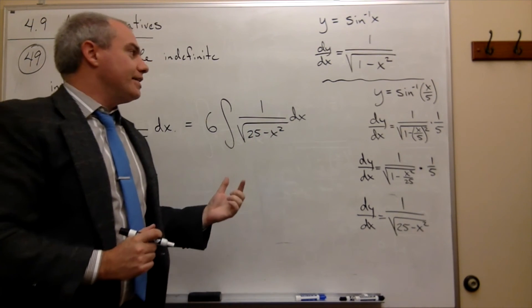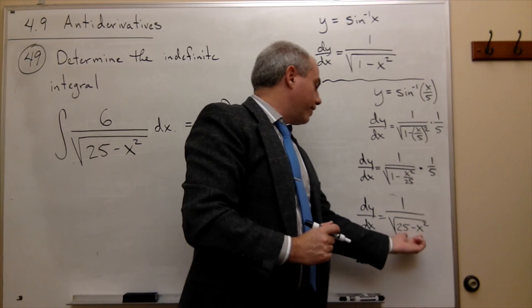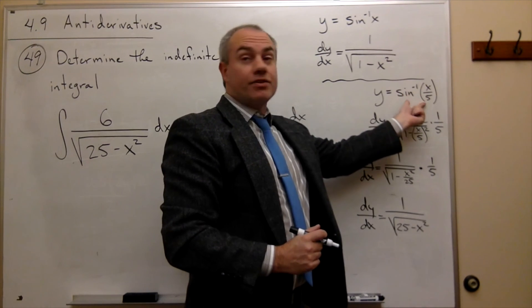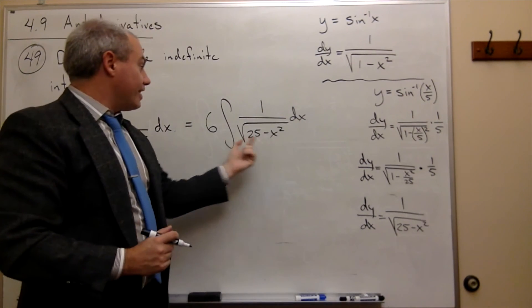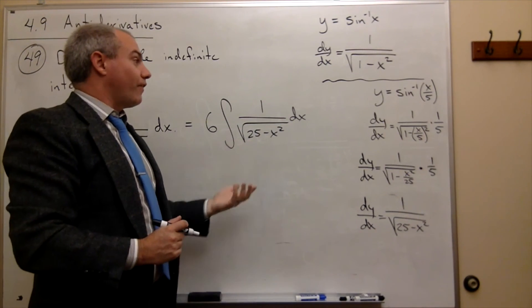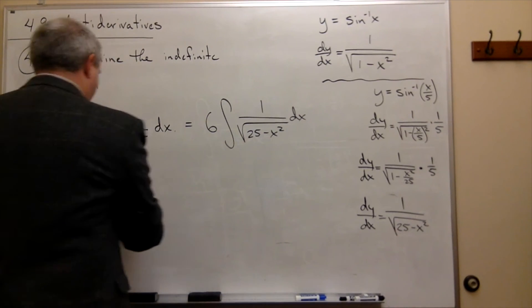So what I need to do is say, okay, if I want this to be the derivative, what do I need to take the derivative of? Sine inverse of x over 5. So this antiderivative is sine inverse of x over 5, plus a constant.